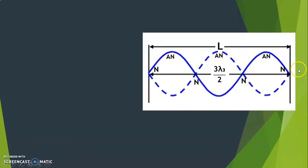Similarly, here we have three segments with a total distance of 3 lambda 3 by 2. There are four nodes and three antinodes, and the length of the wire is L.